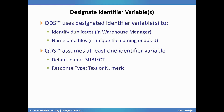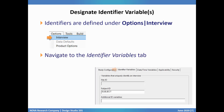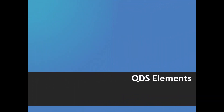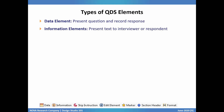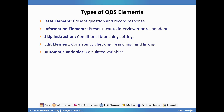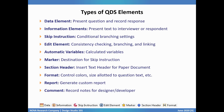Identifiers are defined in the Design Studio under Options > Interview, and then go to the Identifier Variables tab and enter variable names in the Subject ID and optionally in the Additional ID Variables field. All QDS specifications for your questionnaire are built by using different types of elements. For example, all questions are added as data elements. There are many other types of elements including information elements, skip instructions, edit elements, automatic variables, marker elements, section headers, format elements, report elements, and common elements. For those types not covered in this tutorial, you can look up more information in our QDS online help resources.